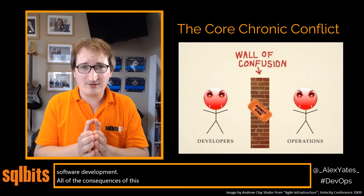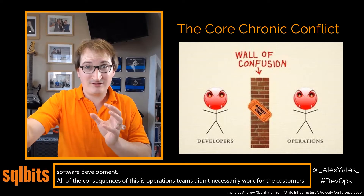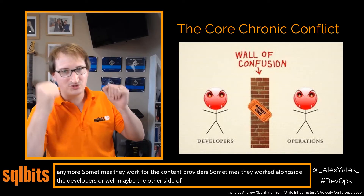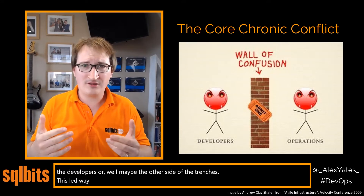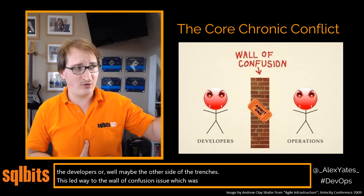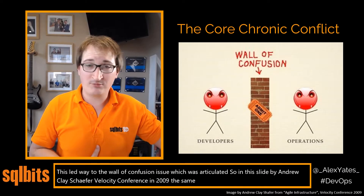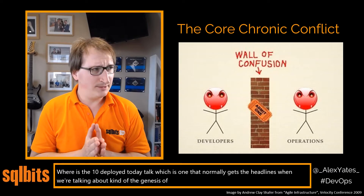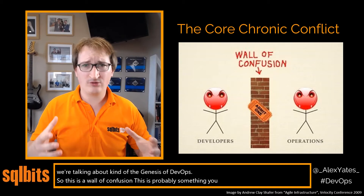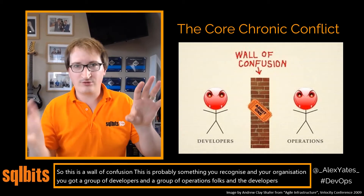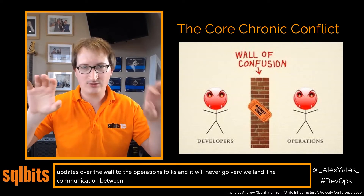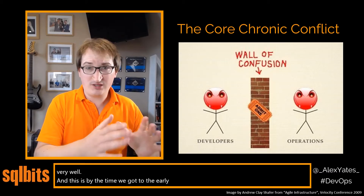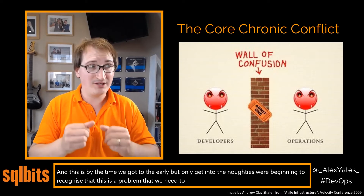One consequence of this is that operations teams didn't necessarily work for the customers anymore — sometimes they worked for the content providers, sometimes alongside developers, or on the other side of the trenches. This led to the 'wall of confusion' issue, articulated so well by Andrew Clay Shafer at Velocity Conference in 2009 — the same conference as the '10 deploys a day' talk that normally gets the headlines when discussing the genesis of DevOps. You've got a group of developers and a group of operations folks, developers throw updates over the wall to ops, it never goes very well, and communication between the two teams is bad.